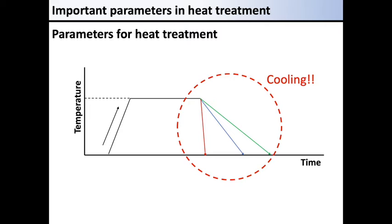There are three types of cooling speed: rapid cooling, slightly slow rapid cooling, and slow cooling.